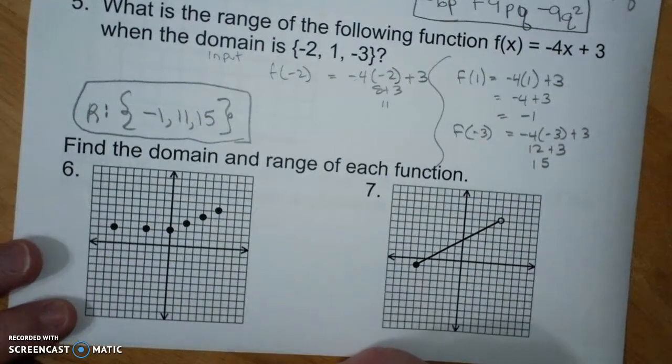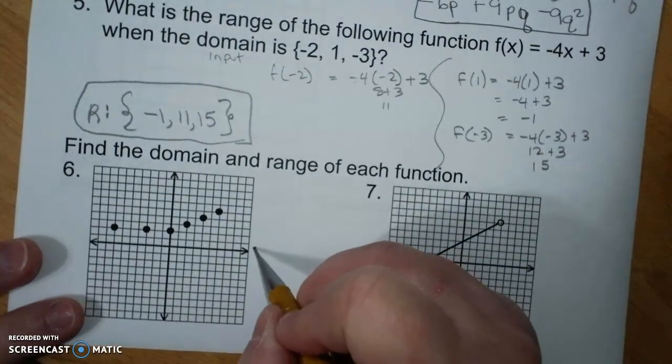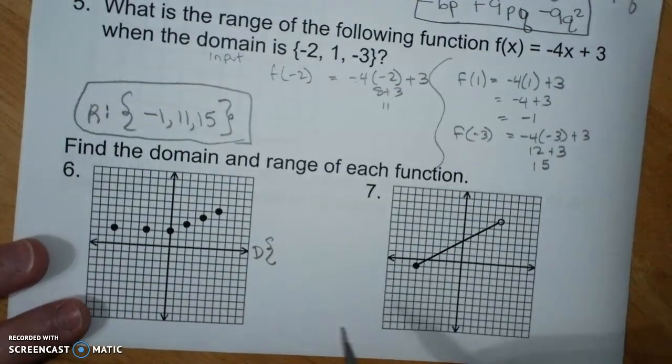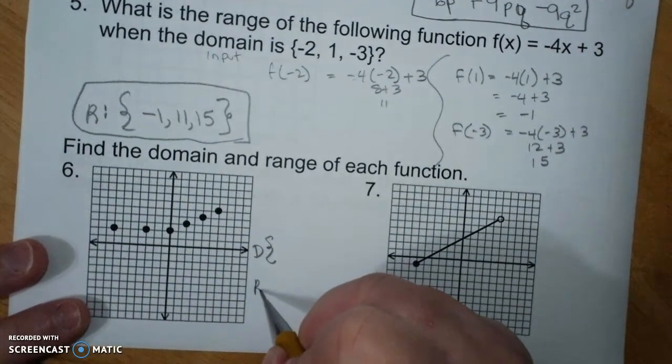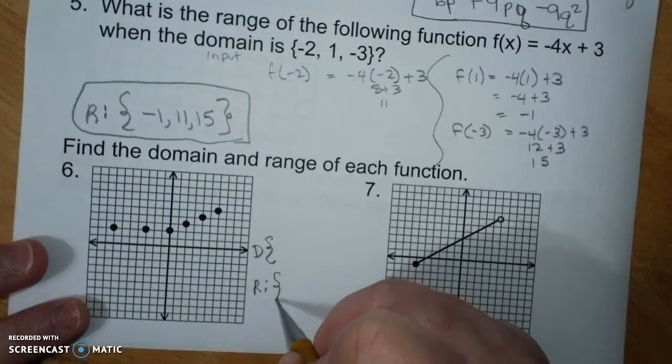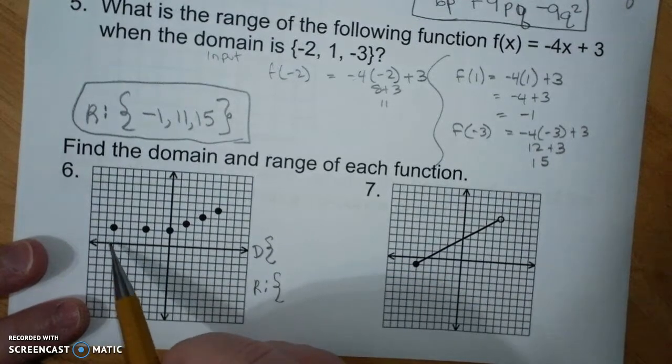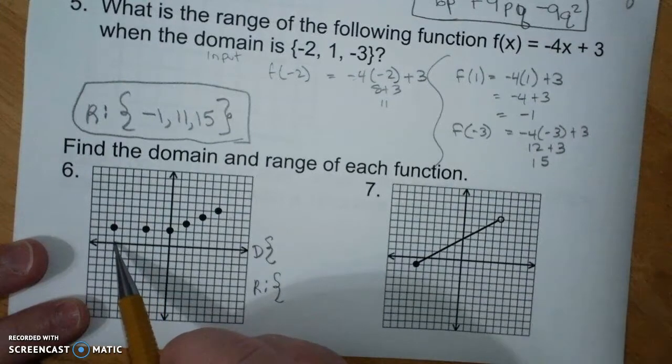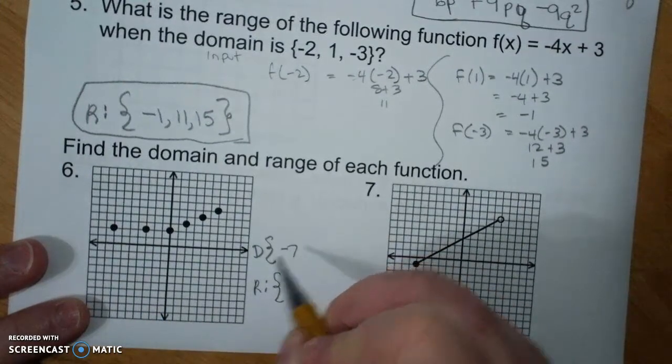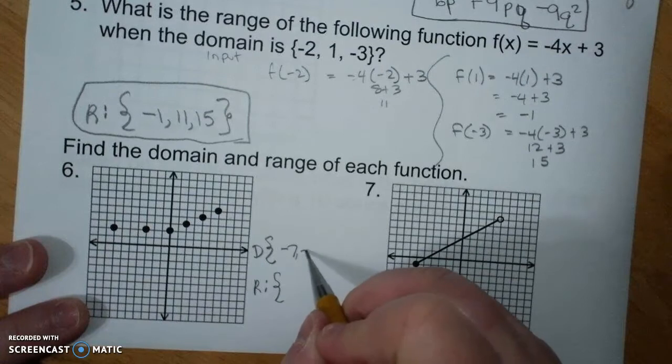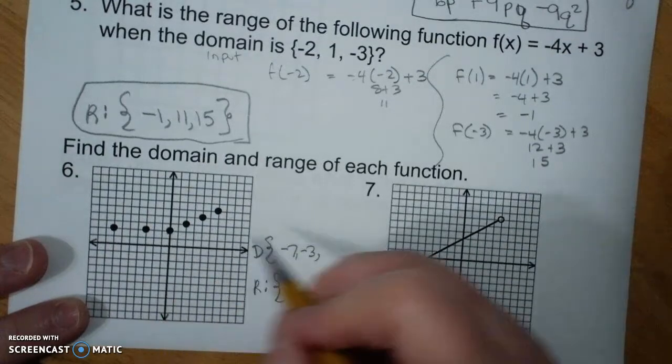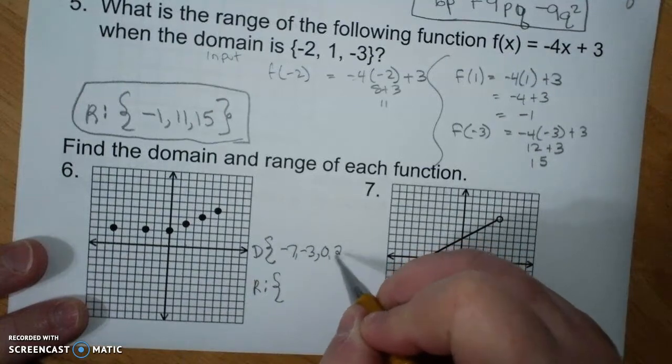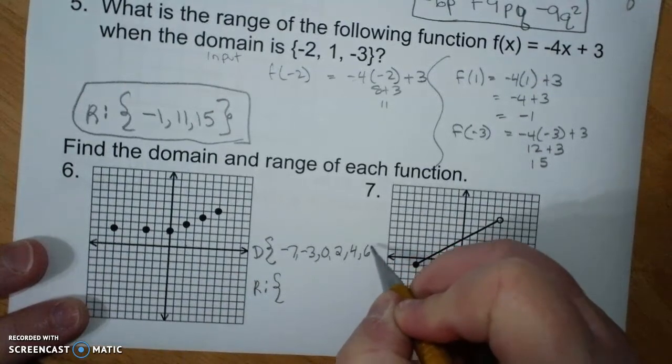Find the domain and the range of each function. Domain. If I go from left to right, it will be in order. And if I go from bottom to top, it will be in order. So negative 7, negative 3, 0, 2, 4, and 6.